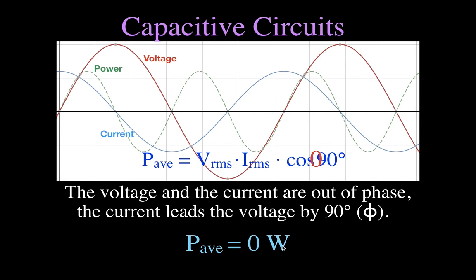How can it be zero watts? I'm going to go through and show you conceptually and qualitatively why the average power in a capacitive AC circuit is zero, by looking at the relationship between voltage, current, and power through one cycle — a quarter of a cycle at a time. For the first quarter cycle, we get a positive voltage and a positive current, so when we multiply those together, we get a positive power.